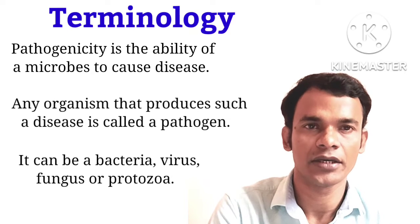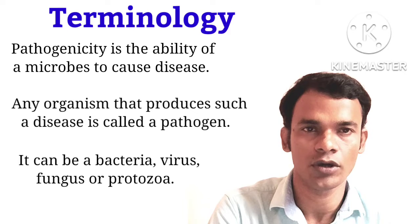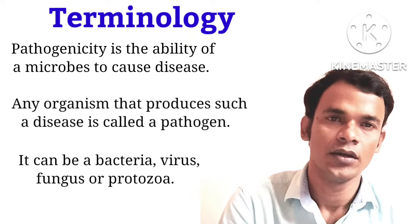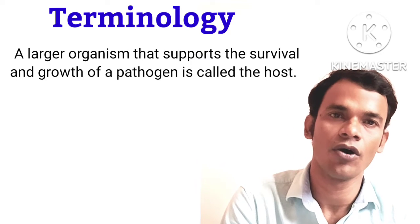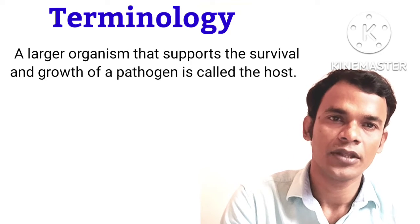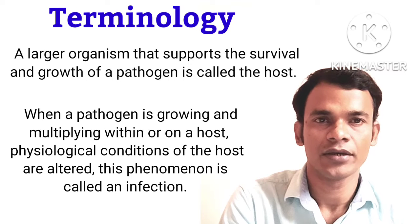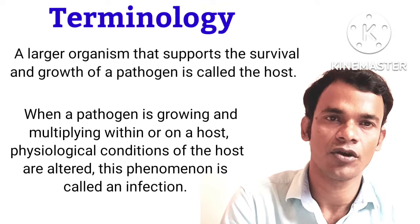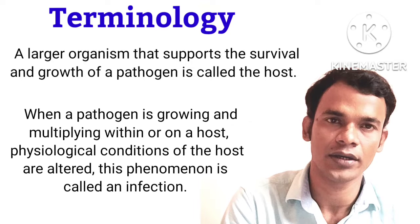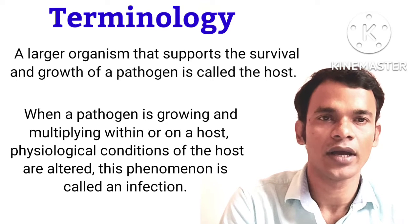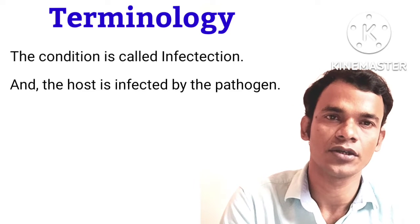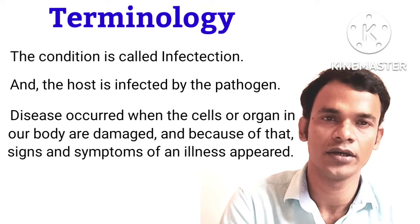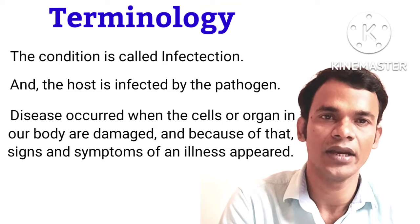A pathogen can be a bacteria, a virus, a fungus, parasites, or protozoa. A larger organism that supports the survival and growth of a pathogen is called the host. When a pathogen is growing and multiplying within or on a host, the physiological conditions of the host are altered. This phenomenon is called an infection. Disease occurs when the cells or organs in our body are damaged and signs and symptoms of illness appear.